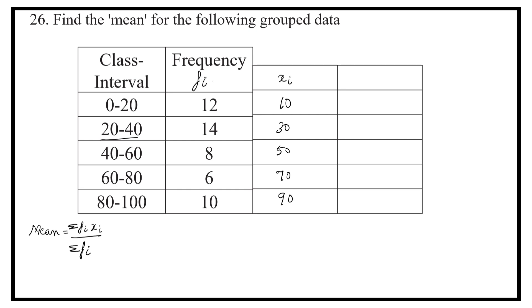As you know, frequency is fi. The next column is meant for fi into xi. 12 into 10 is 120, 14 into 30 is 420, 8 into 50 is equal to 400, 6 into 70 is 420, 10 into 90 is equal to 900.